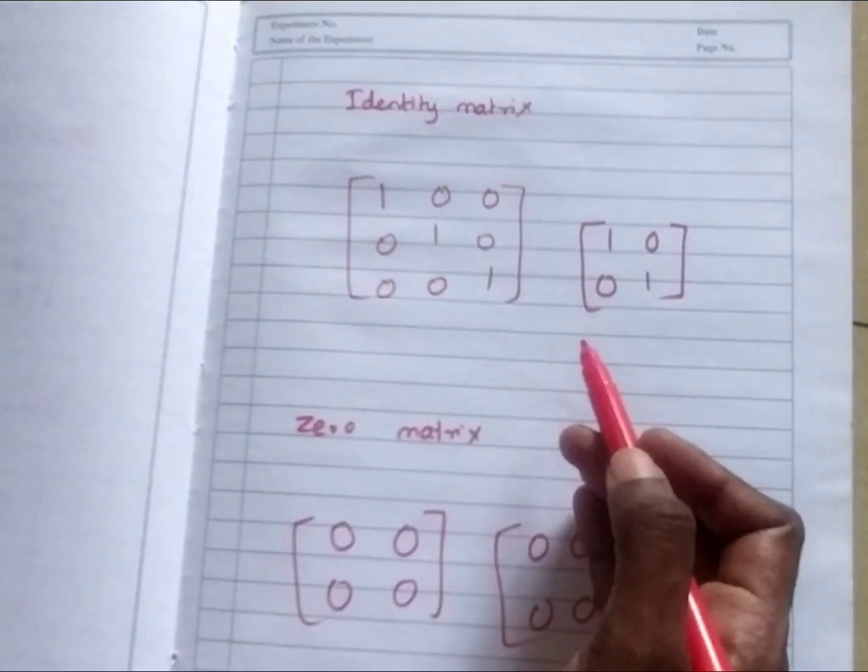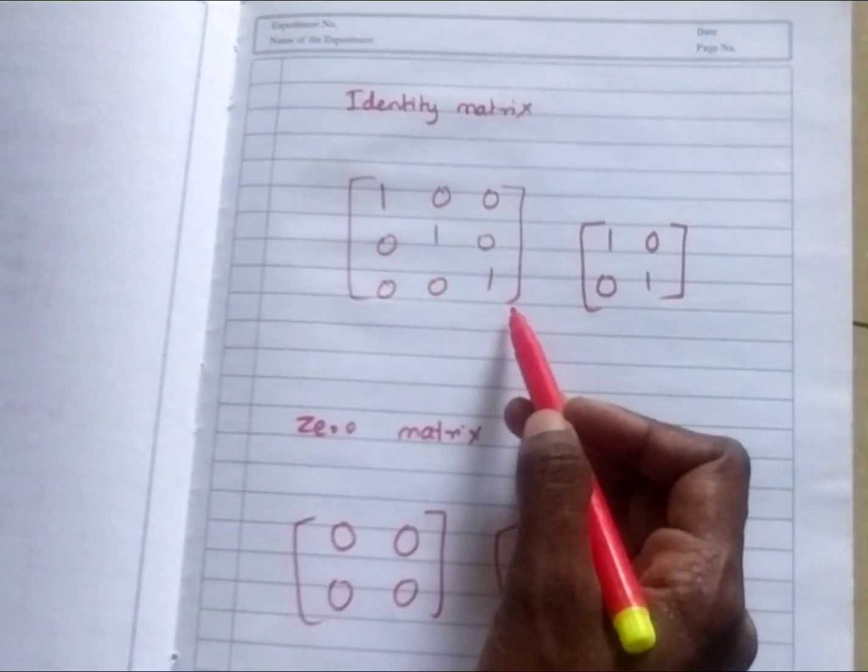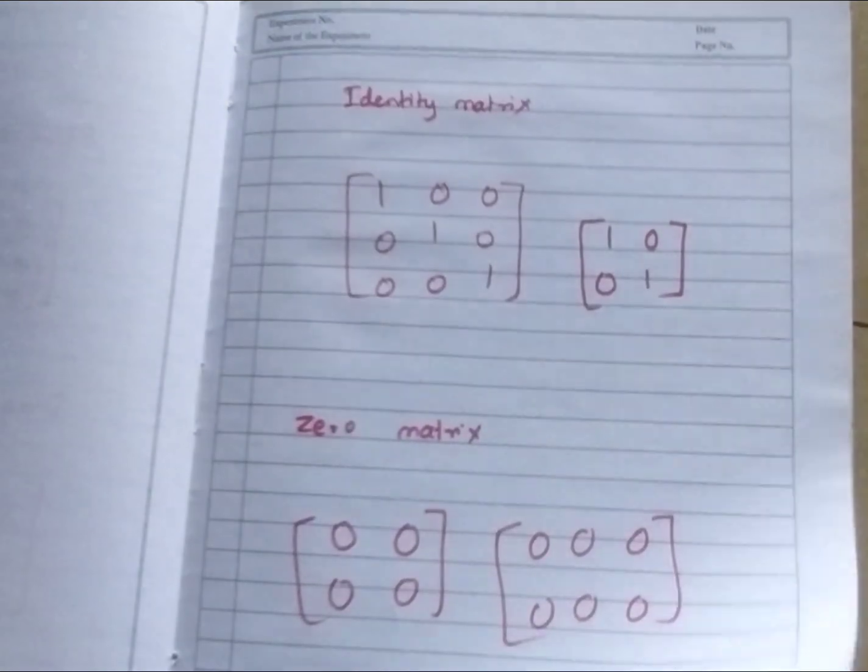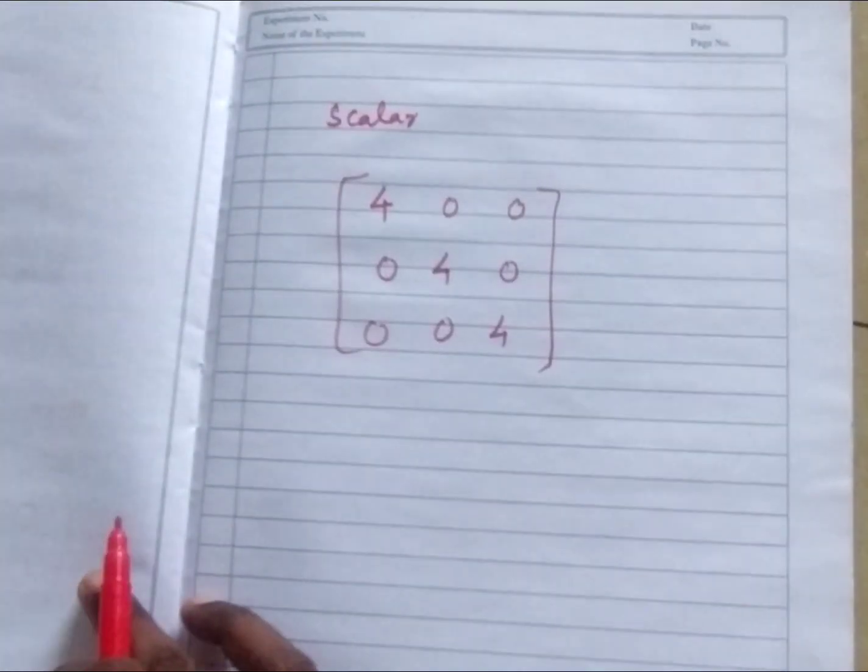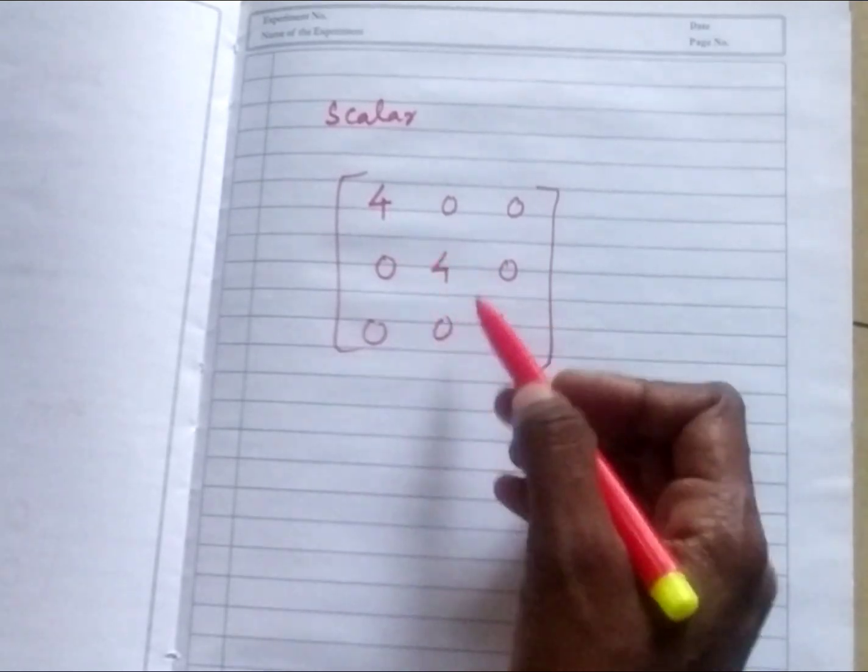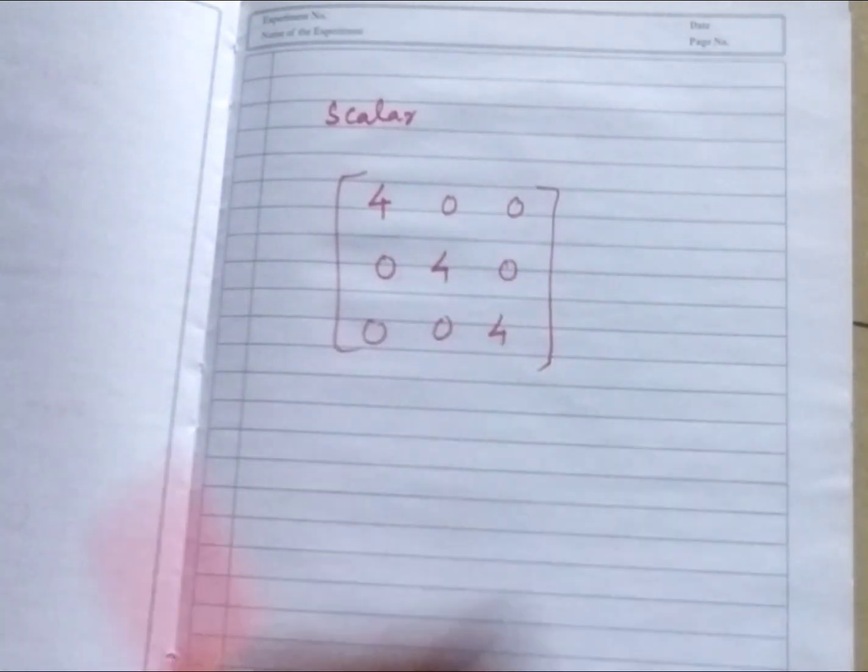Diagonal matrix. Only in diagonal there should be number. It can be any numbers. Others will be 0. Next is identity matrix. In the diagonal there should be only 1. Other places will be 0. 0 matrix. All the elements will be 0 in the matrix. Next is scalar. In the diagonal the number should be same. So that you can take it outside like that. Other numbers should be 0.